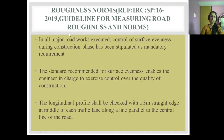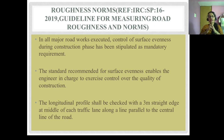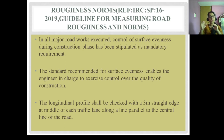For roughness norms, on all major roads, control of surface evenness during the construction phase has been stipulated as a mandatory requirement. The standard recommended for surface roughness enables the engineer in charge to exercise control over the quality of construction. The longitudinal profile shall be checked with a 3-meter straight edge at the middle of each traffic lane, along a line parallel to the central line of the road.